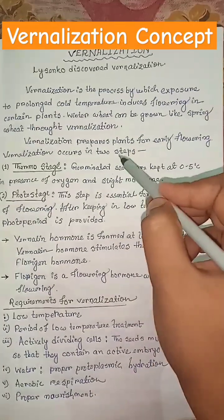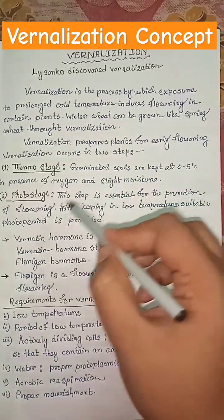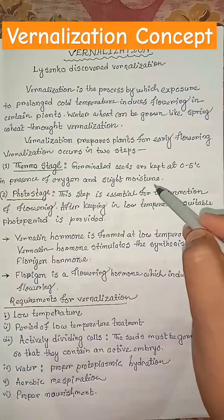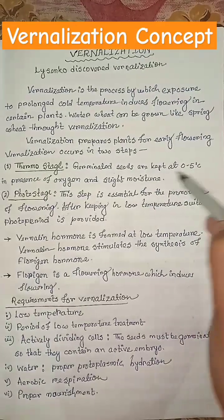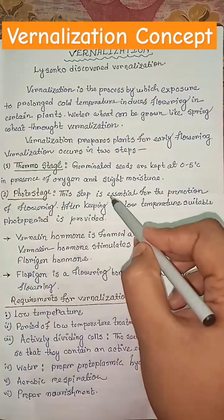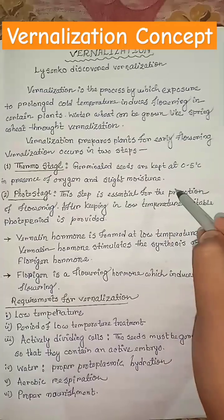It occurs in two steps: thermostage and photostage. In thermostage, germinated seeds are kept at 0–5 degrees Celsius in the presence of oxygen and slight moisture.